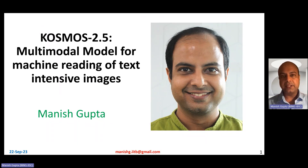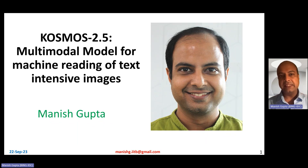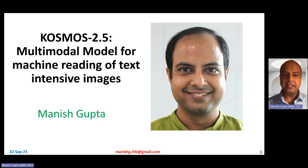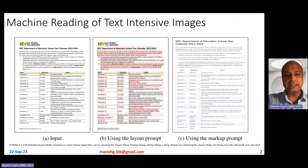Hi, my name is Manish Gupta, and in this video I'm going to talk about Cosmos 2.5, which is a multimodal model for machine reading of text-intensive images. This is a model from Microsoft Research, and in short, the model is meant for doing optical character recognition — take an image and convert it to bounding boxes as you can see.